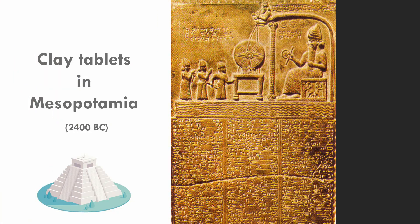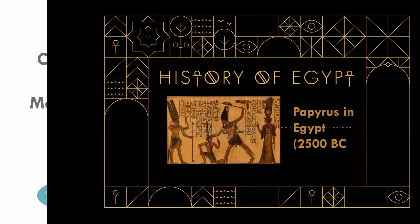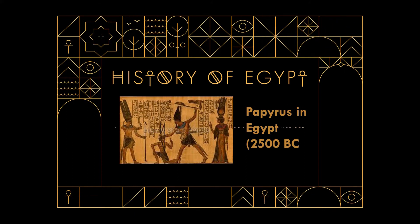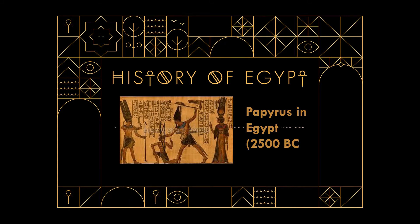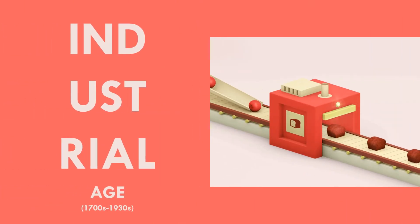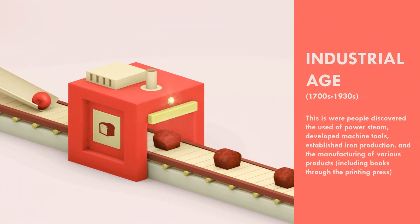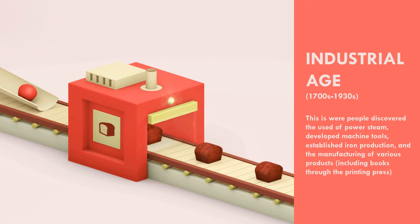Clay tablets in Mesopotamia, 2400 BC. Papyrus in Egypt, 2500 BC. A collection of various products, including books through the printing press.